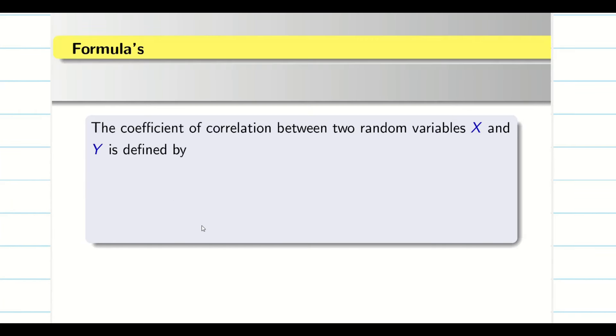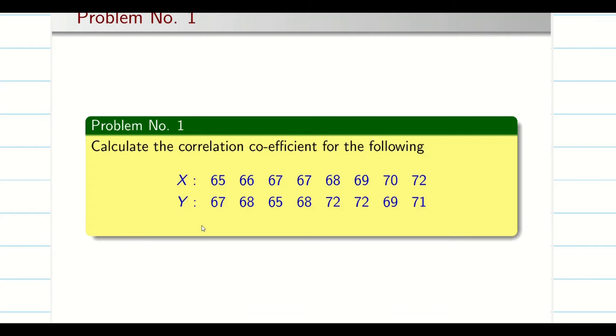When the covariance and standard deviation are given in your problem for the MCQ, you can use this formula. R is equal to covariance of x, y divided by standard deviation of x and standard deviation of y. So now let us go into the problem.